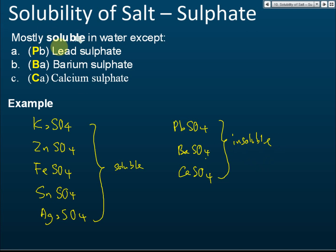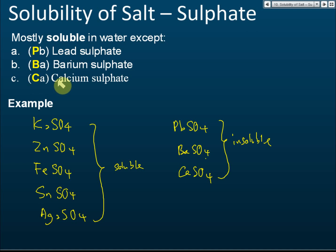To help you remember, notice the first letters of the symbols of these three elements — lead (Pb), barium (Ba), calcium (Ca) — giving us 'PBC.' All sulfate salts are soluble except PBC. P is lead, B is barium, and C is calcium. You can use your own ways to memorize, but this PBC mnemonic is useful. So all sulfate salts are soluble except PBC sulfates, which are insoluble.